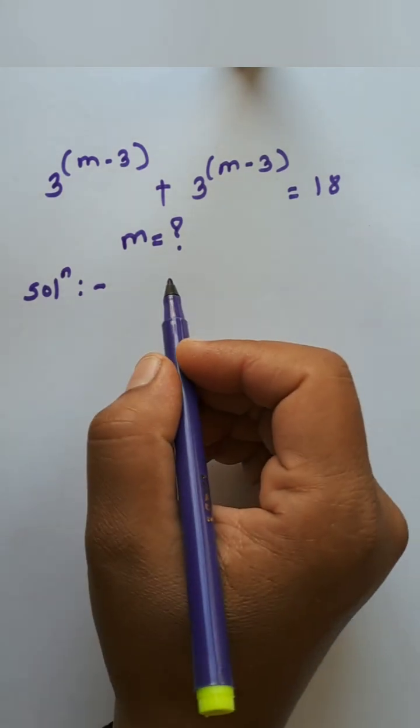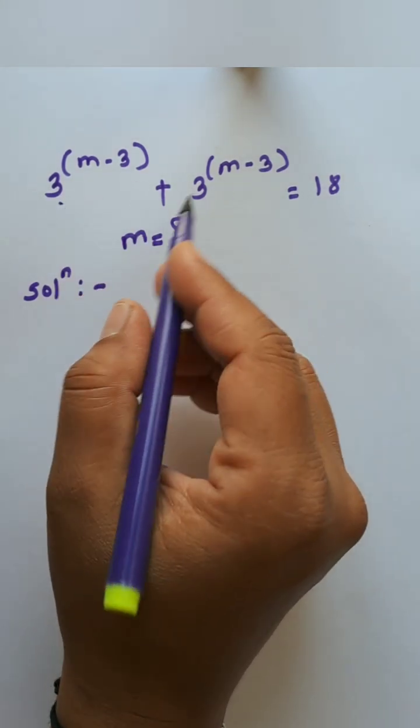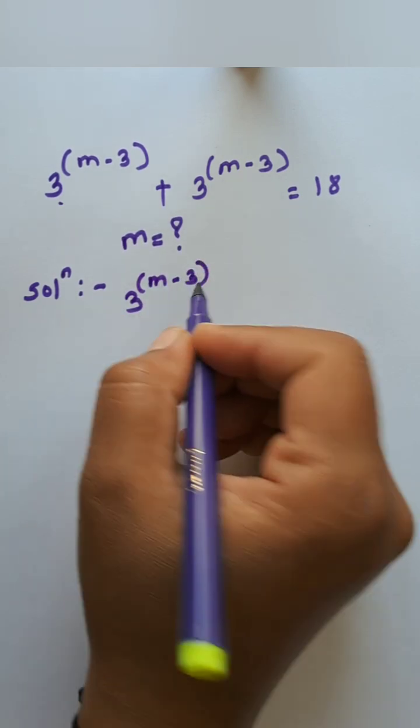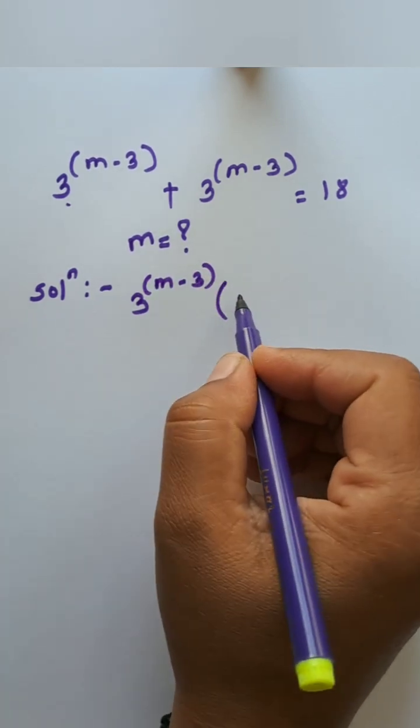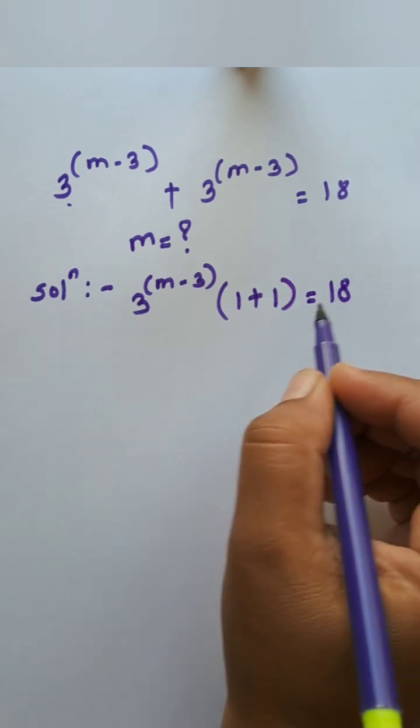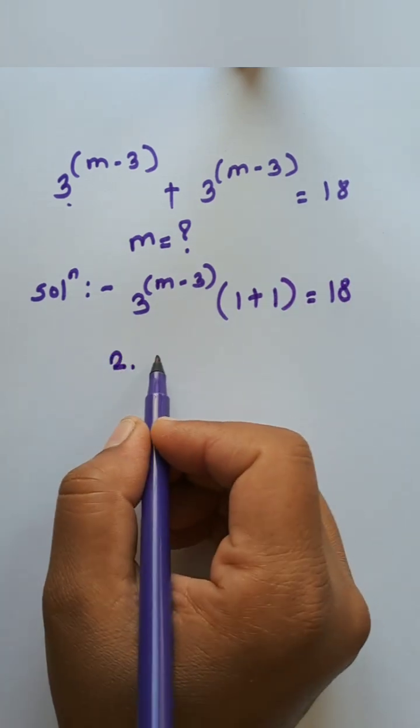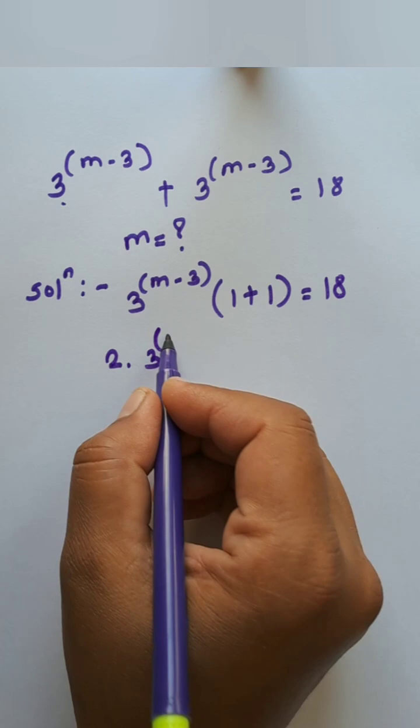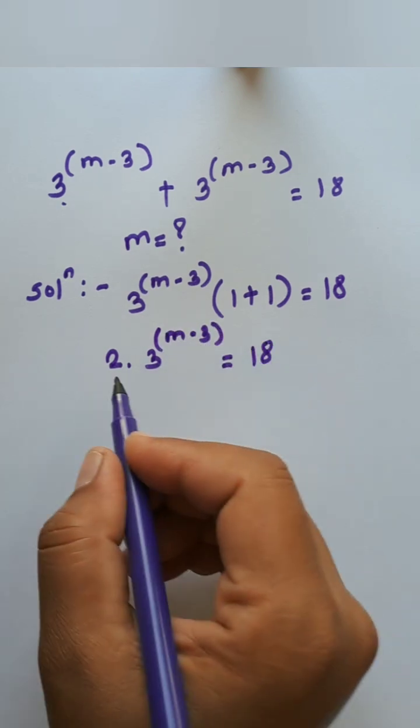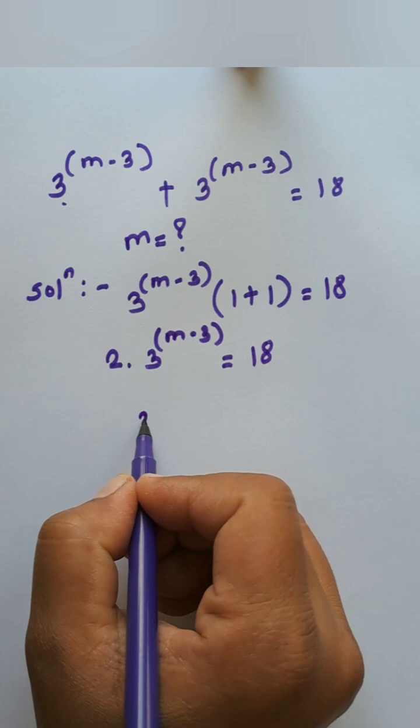The given problem is 3 raised to m minus 3 plus 3 raised to m minus 3 equals 18. What is the value of m? Here, 3 raised to m minus 3 is taken as common, so write down 3 raised to m minus 3 in brackets, 1 plus 1 equals 18. After adding this, we get 2 times 3 raised to m minus 3 equals 18.